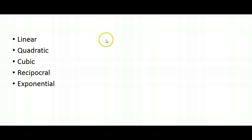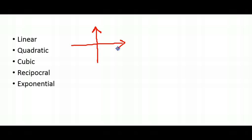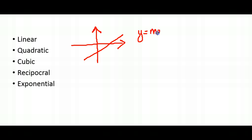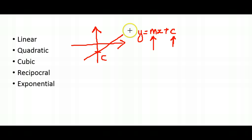We have linear graphs — suppose this is the y-axis and this is the x-axis. A linear graph would simply be a straight line graph in the form of y equals to mx plus c, where c is the y-intercept. This portion over here is c, and m is the gradient of the graph — in other words, the slopeness of the graph.